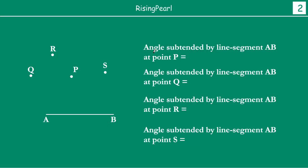Now, Dostho, the question is: angle subtended by line segment AB at point P. So, Dostho, agar aap P pe khadhe ho, if we look at the entire line segment AB, what will be the angle that this line actually has at point P? So, kaise karke pata lagate hai? The way we do this — we simply join AP and BP. So, yeh jo angle hai, Dostho, this angle basically gives us the angle subtended by line segment AB at point P — that is, angle APB.